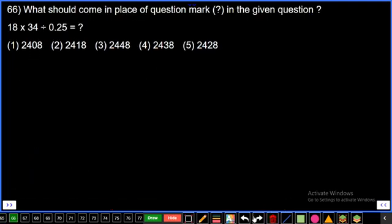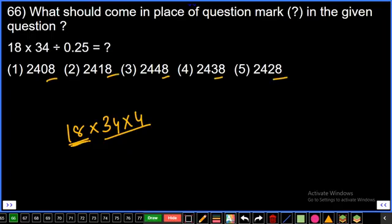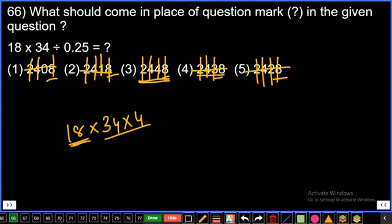Question number 66: Simplifications. 18 into 34 divided by 0.25. 34 by 0.25 can be written as 34 into 4. So 18 into something - since 18 is there, answer must be 9 multiple. Go to options and verify 9 multiple. 2 plus 4 is 6, plus 8 is 14. 2, 4, 6, 7, then 8. Adding digits: 18, it is 9 multiple. Here it is 6, 3, 9, then 8 - not 9 multiple. Answer is third option, final answer.